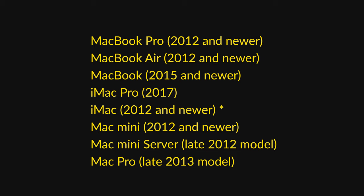The first step before you proceed with installation is to download an image of the Windows operating system. Before doing that, find out which version your Mac computer can support. The models compatible with Windows 10 are listed on the screen: MacBook Pro, MacBook Air, MacBook 2015 and newer, iMac Pro 2017, iMac, Mac Mini, Mac Mini Server late 2012, and Mac Pro late 2013. If your computer is older than anything on this list, you will be able to install Windows 7.